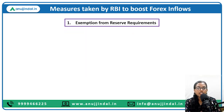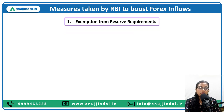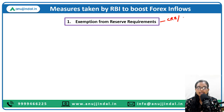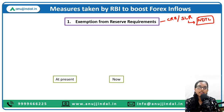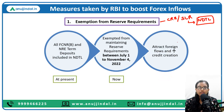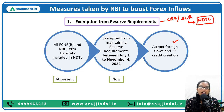The first measure taken by RBI is the exemption from reserve requirements. As we all know, reserve requirements are CRR and SLR — Cash Reserve Ratio and Statutory Liquidity Ratio — calculated as a percentage of Net Demand and Time Liabilities (NDTL). RBI has decided to exempt certain depositors from this reserve requirement; by doing so it will attract foreign flows and increase credit creation in the economy.